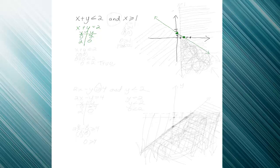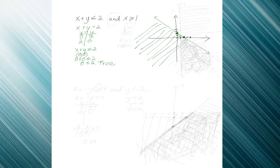Now I've got x plus y equals 2 graphed. I'll go back to the real problem, which is x plus y is less than or equal to 2. I'll choose a test point (0, 0). That will put 0 in for x and 0 in for y, so I'll have 0 plus 0 is less than or equal to 2, so 0 is less than or equal to 2, and that's true — 0 is definitely less than 2. So (0, 0) gives me a true for the line x plus y equals 2, and so I will shade in that direction.